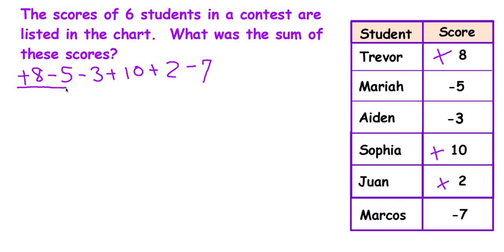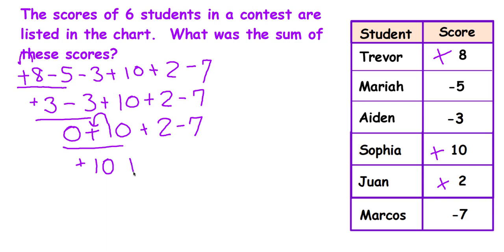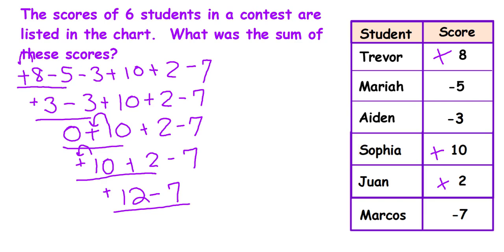Underline two at a time. The signs are different — I subtract. I use the sign in front of the biggest digit and bring the rest of the problem down. The signs are different — I'm going to subtract. There is no sign for zero — I bring the rest of the problem down. Zero plus 10 is 10. Use the sign in front of the biggest digit — the only digit is 10 and it's positive. Bring the rest down. The signs are the same — you add, use the sign in front of the biggest digit. Bring the rest down. The signs are different — you subtract, you use the sign in front of the biggest digit. So the sum of their scores was a positive.